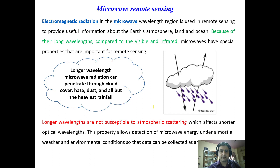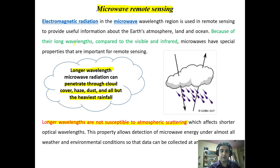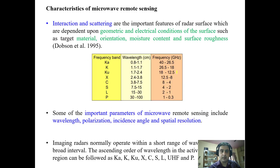Welcome back. Today we will discuss microwave remote sensing. As the name suggests, this remote sensing takes place in the microwave region where the wavelengths are long and can penetrate through cloud cover, haze, dust, and even the heaviest rainfall. This is because the longer wavelengths are not susceptible to atmospheric scattering, so the limitations of smaller wavelengths in the visible and infrared are overcome by microwave remote sensing.